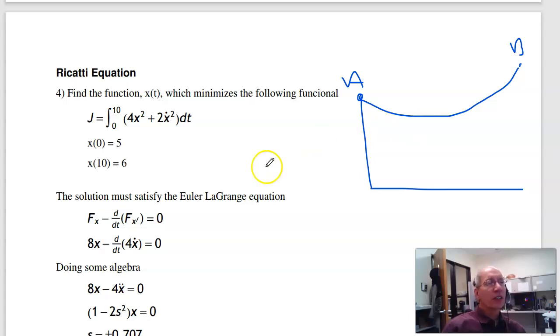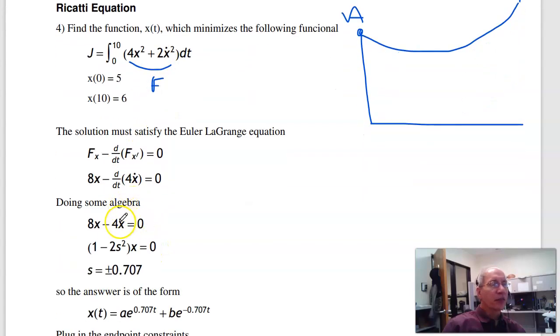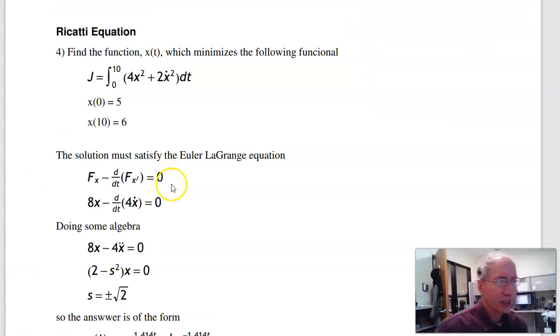Which path minimizes the total cost? Well, to do that, my functional, this guy right here is my functional f. Any solution has to satisfy the Euler-Lagrange equation. So plugging it in, I get 8x - d/dt(4x_dot), take the derivative. Any solution has to satisfy that differential equation. So doing the algebra correctly, there was a mistake previously, I get 8x - 4x''. Let s be derivative, that's factoring out the 4: (2-s²)x = 0.